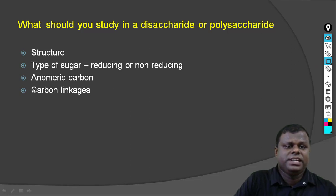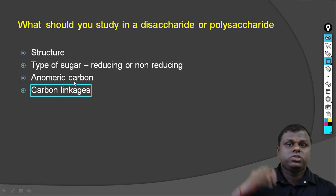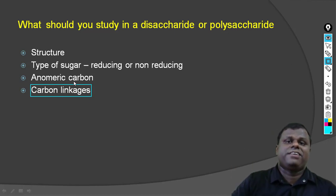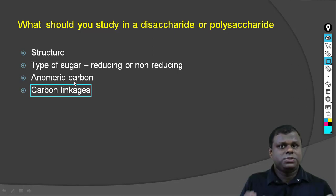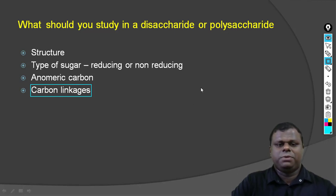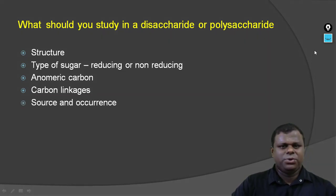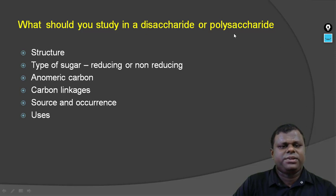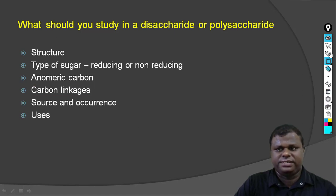Next is carbon linkages — this is one of the most important parts in the study of disaccharides or polysaccharides. Carbon linkages are important because we have polyhydroxy, meaning many OH groups. When there are many OH groups, the number of linkage combinations are very, very high. We'll be studying which two carbon atoms are linked together. And then source and occurrence — whether it is natural or synthetic — and then uses. These are the things to keep in mind when studying any disaccharide or polysaccharide.